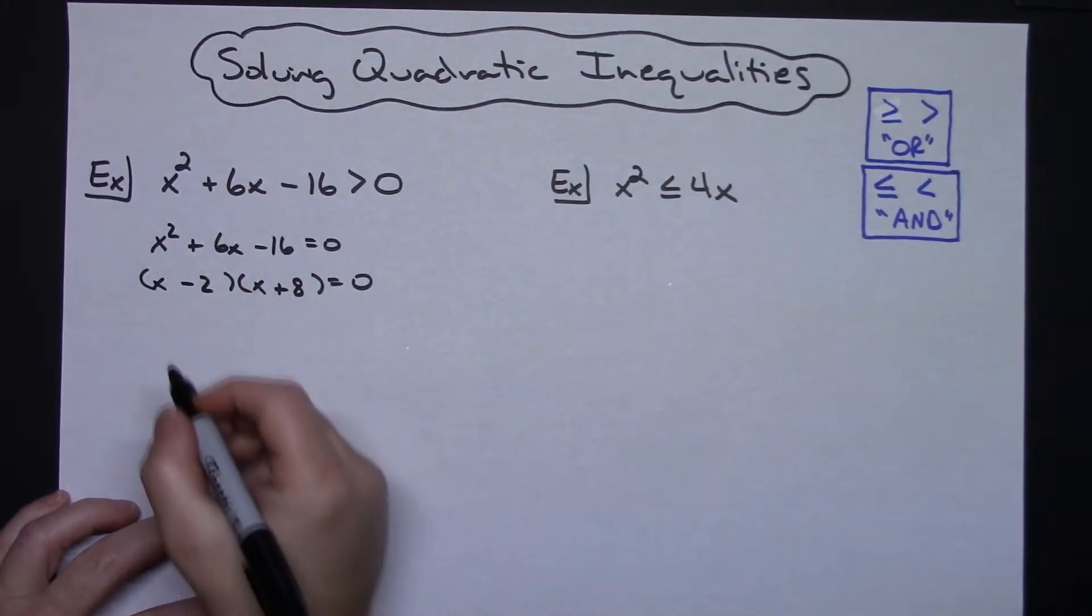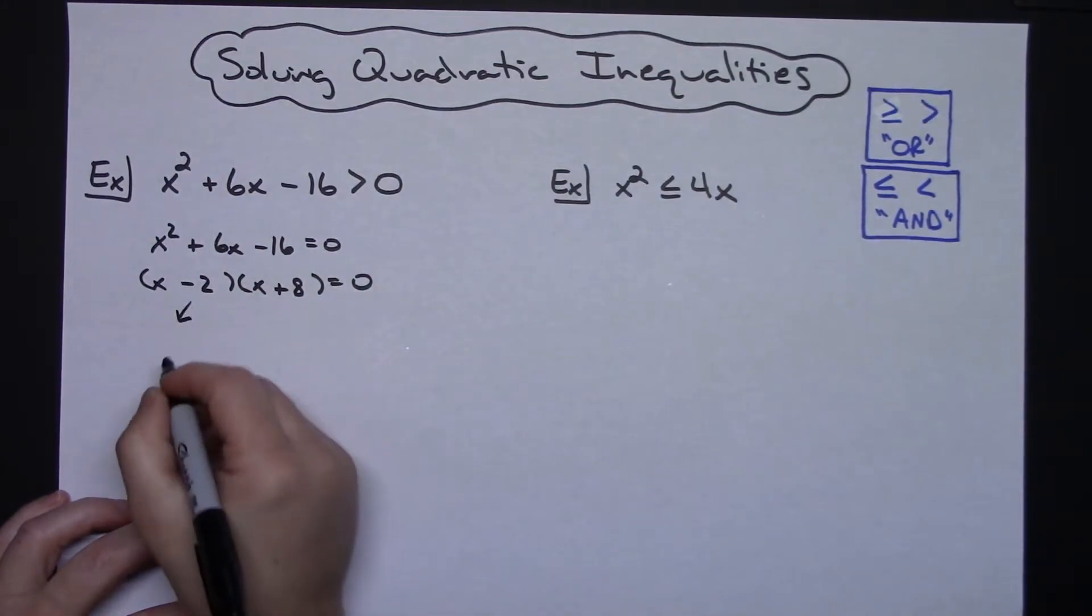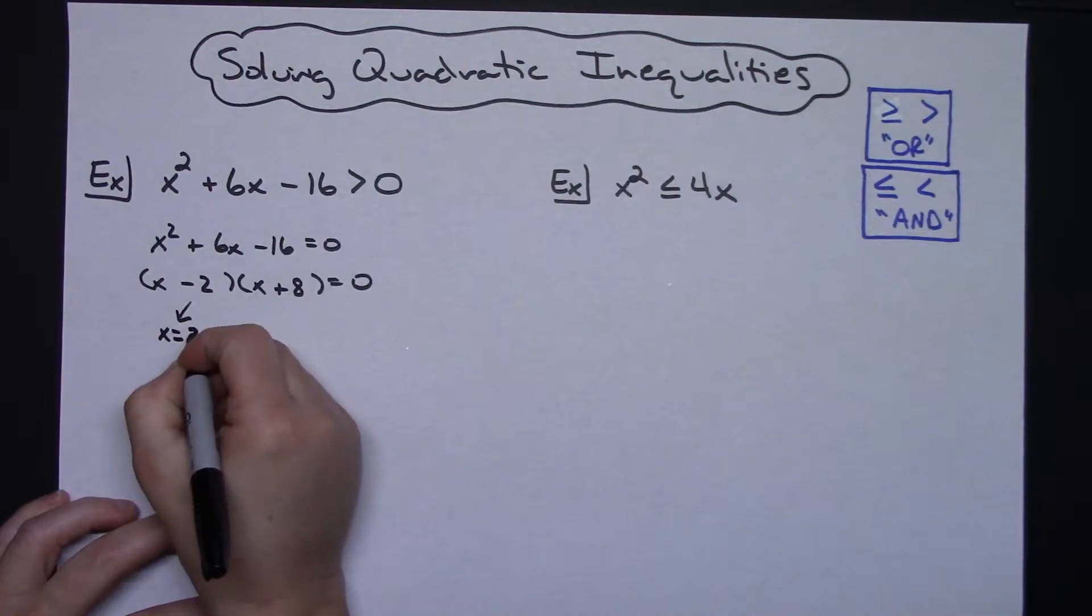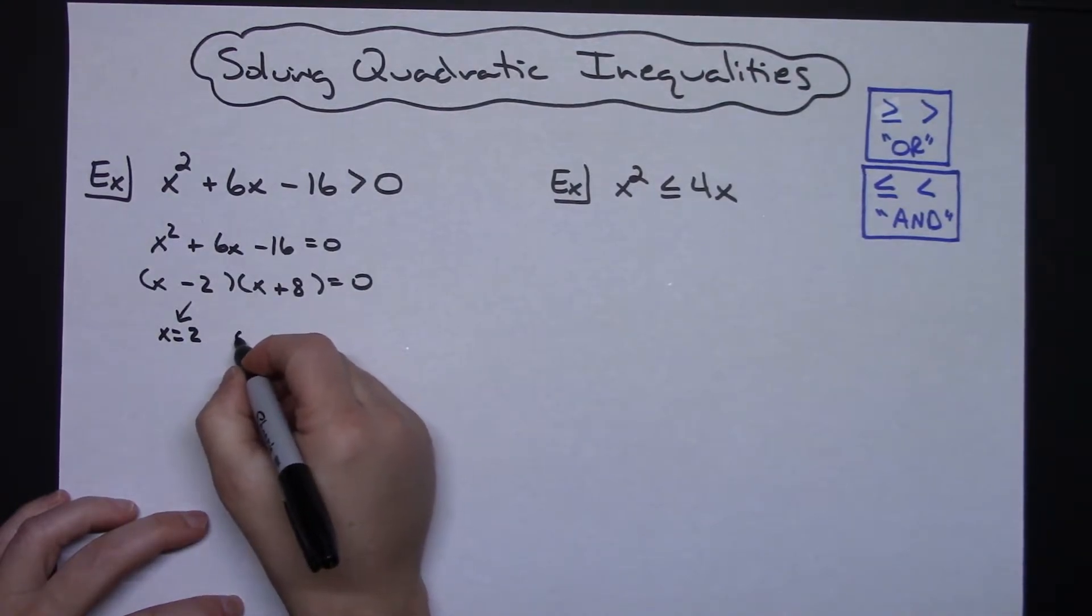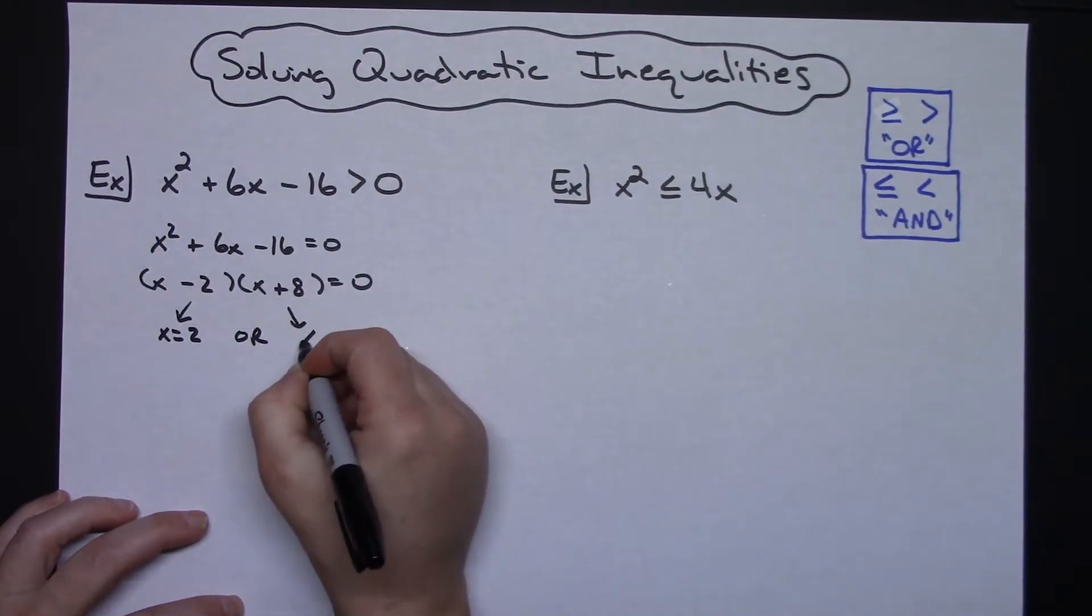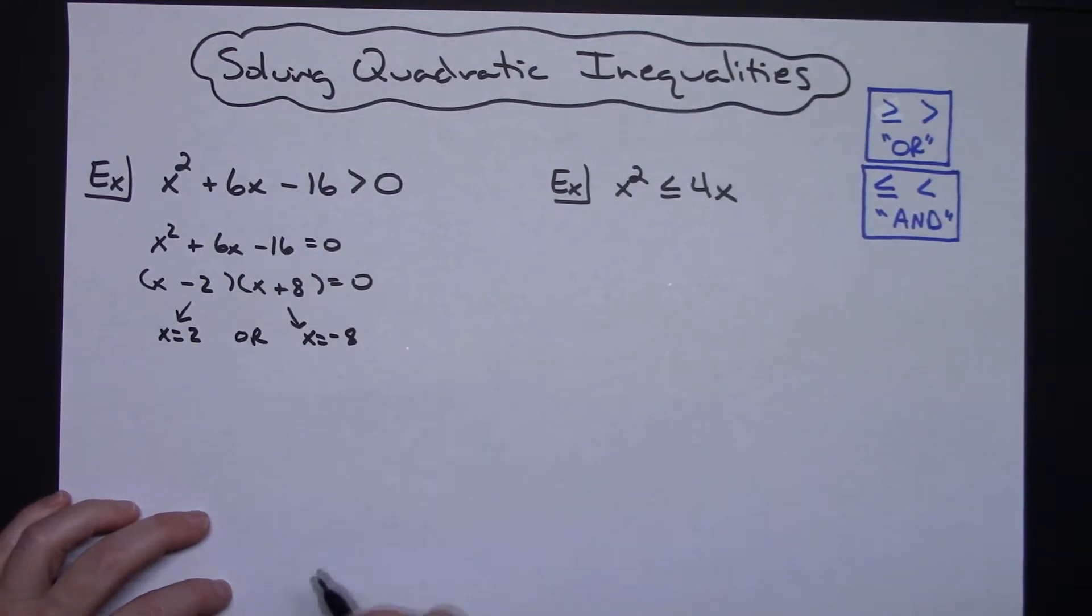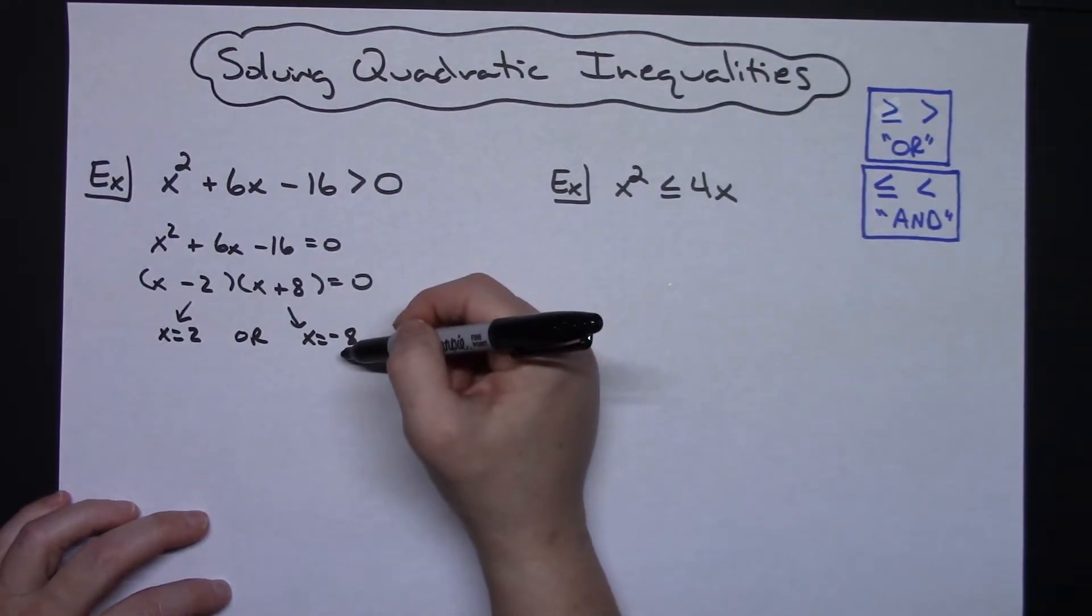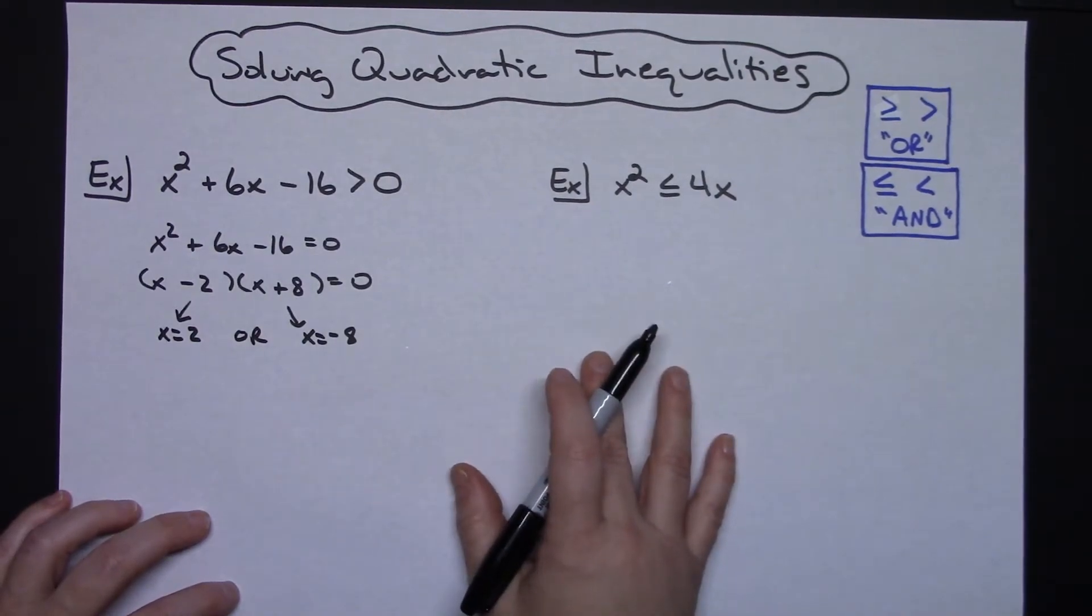That's going to give me the negative 16. That'll give me the positive 6 in the middle. So, solving each one of these, x is going to be equal to 2 or x is going to be equal to negative 8.